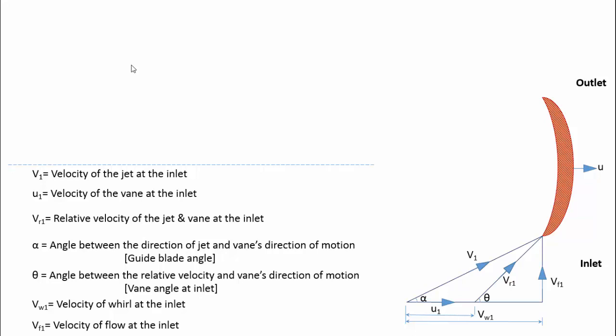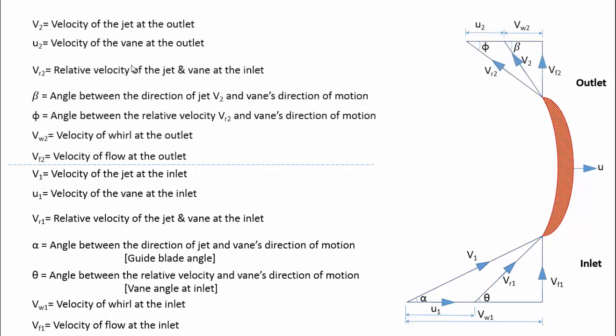The same thing at the outlet side of the vane is called outlet triangle, and all the terms are given with the suffix 2. We can observe that the jet velocity at the outlet is reduced, as some of the energy is spent to move the blade.